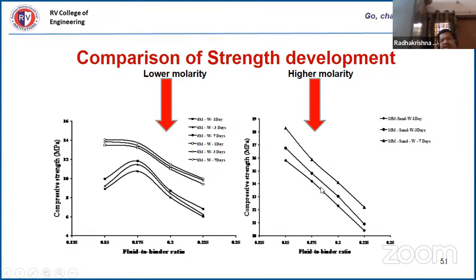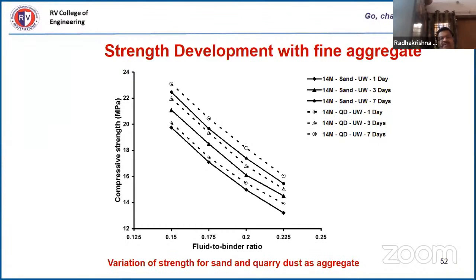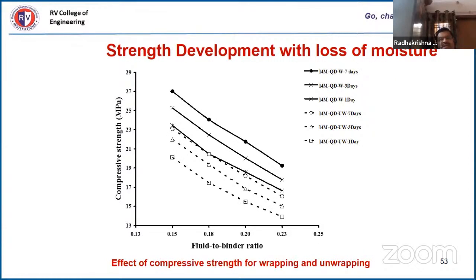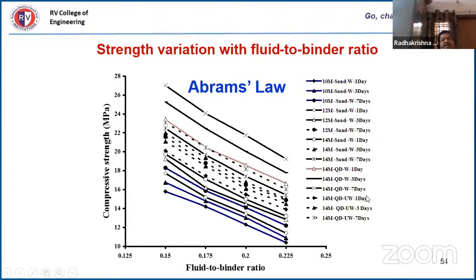Wrapped samples show higher strength than unwrapped. The age-old Abrams' Law holds good even for geopolymers — as stated in 1918 for concrete, it is applicable here too. As fluid-binder ratio increases, strength decreases. Below F/B of 0.15, blocks cannot be made as the mix is too harsh. Above 0.225, the mix becomes saturated and cannot form blocks. So we operate in the range 0.15 to 0.225.